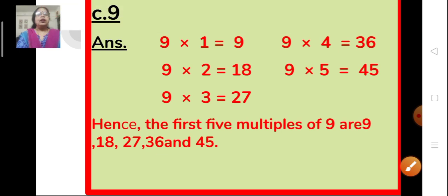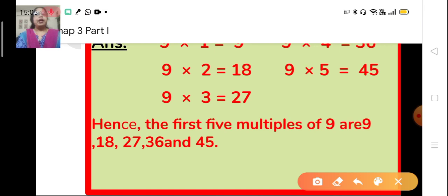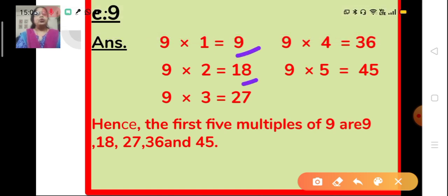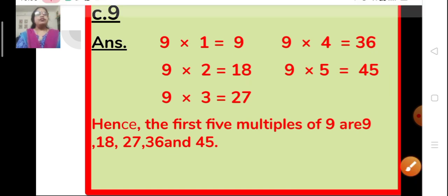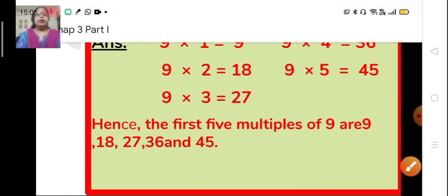Now let us find the first 5 multiples of 9. In the similar fashion: 9×1=9, 9×2=18, 9×3=27, 9×4=36 and 9×5=45. So 9, 18, 27, 36 and 45 are the first 5 multiples of 9.